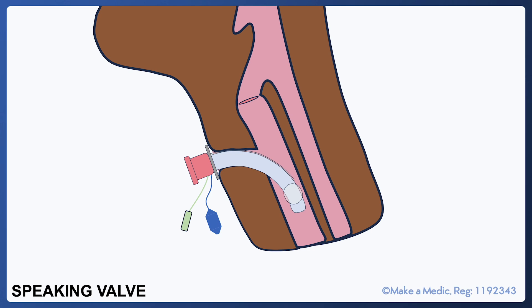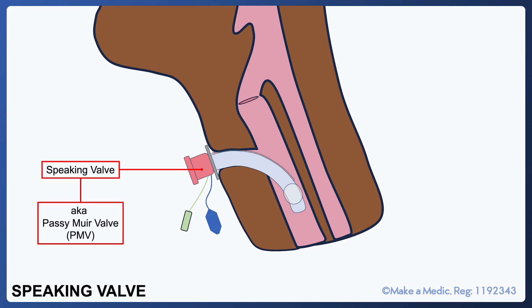When working in ITU, you may also hear the term speaking valve being used. It's also sometimes referred to as a Passy Muir valve or PMV. It's essentially a small valve that can be attached to the outer end of the tracheostomy tube. It's very important that patients with a speaking valve in place have their cuff deflated — also known as cuff down — and you'll see why in the next slide.